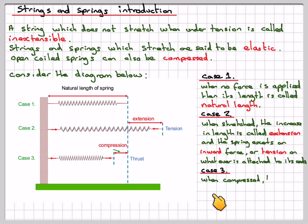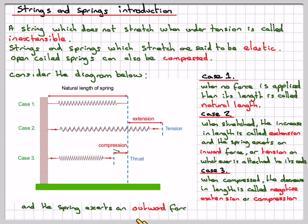Case three: when compressed, the decrease in length is called a negative extension or a compression, and the spring exerts an outward force or thrust on its ends. In these cases, if you release the spring from its force, it should return to its natural length.